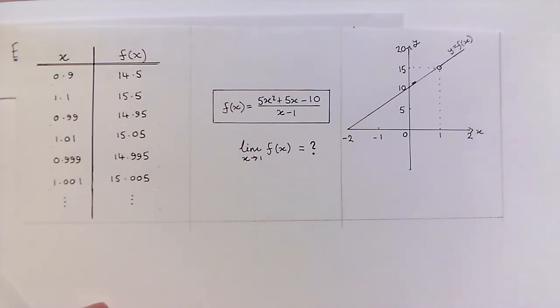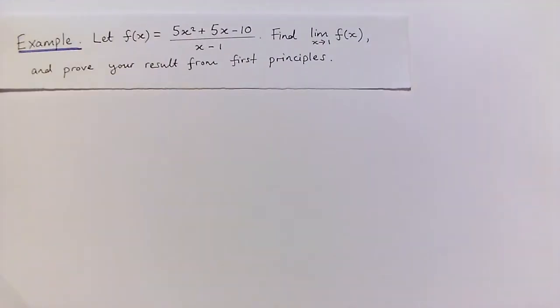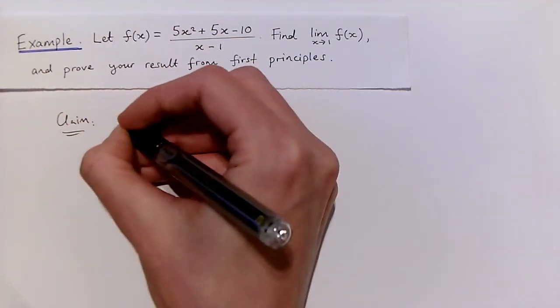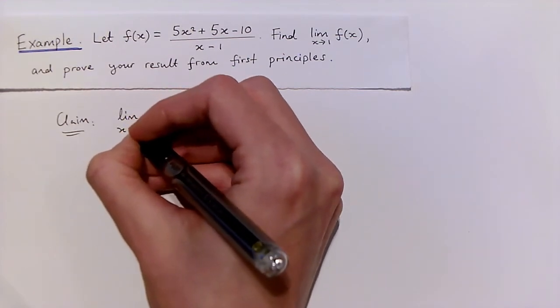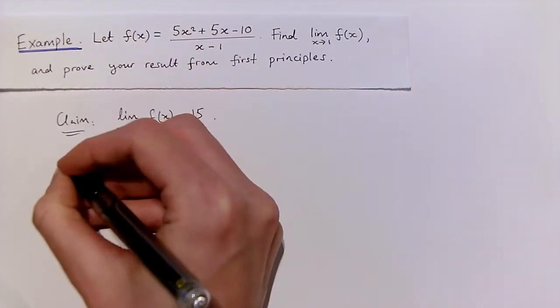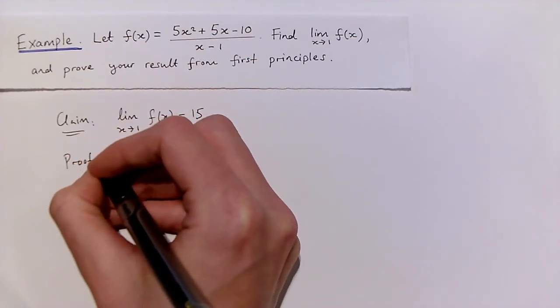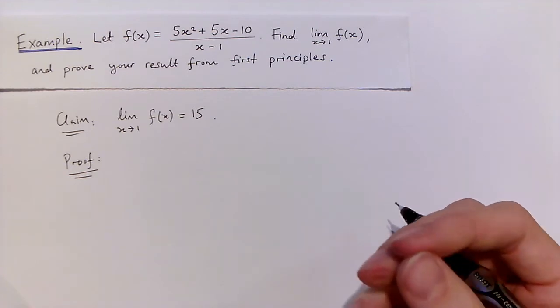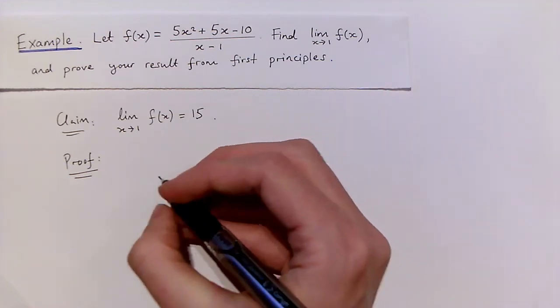So let's try to prove from first principles, in other words, from the definition of limit, that the limit as x approaches 1 of f(x) is equal to 15. Now, for our proof, we're going to need to check the definition of limit. So we need to show that given any positive epsilon, we can find a positive delta.